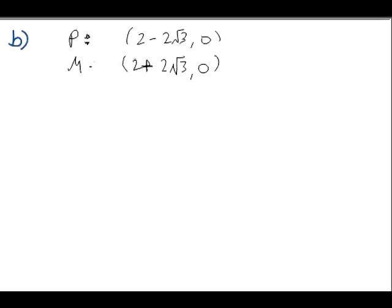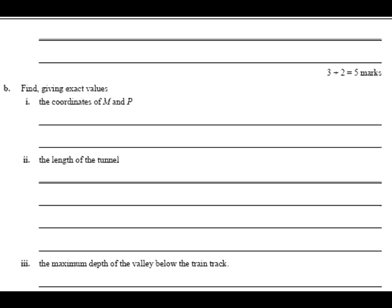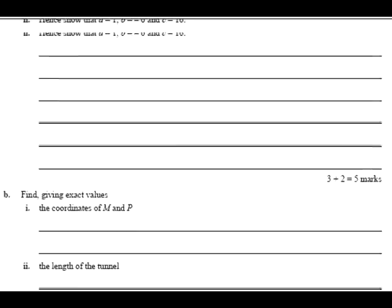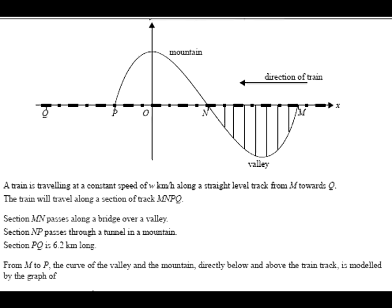0... and M... is 2 plus... 2 root 3... 0... plus. Yeah. That's all you need to do. Really simple. Free marks there, really. The second part of B. The length of the tunnel. Okay. Come back up to the diagram. Look at what they've designated the tunnel. The tunnel is obviously from N to P. Right?